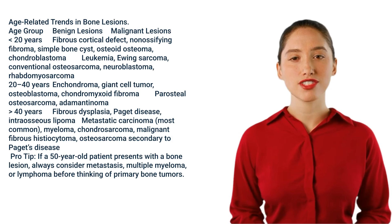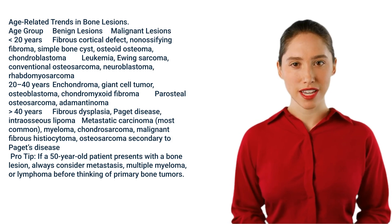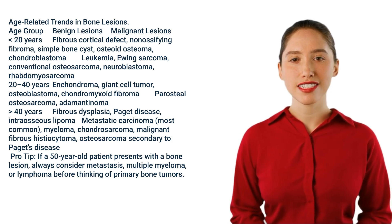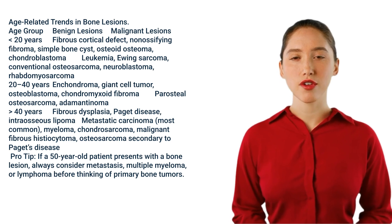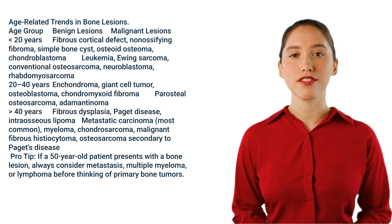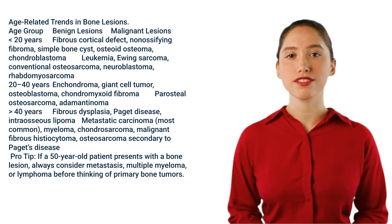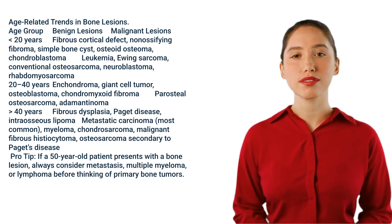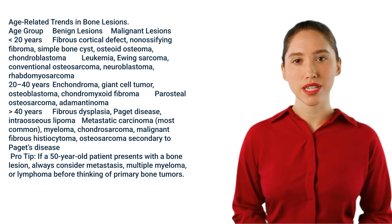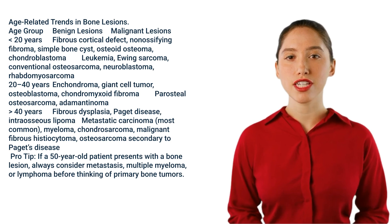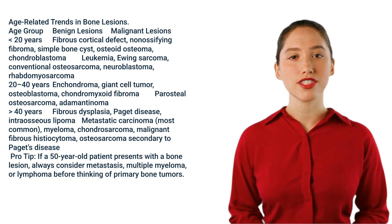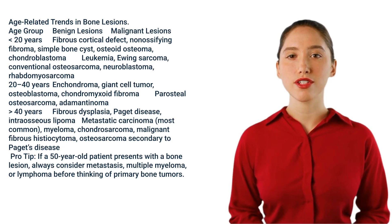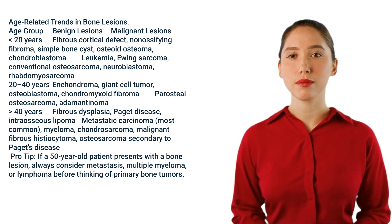Age-related trends in bone lesions. Before 20 years, common benign lesions include fibrous cortical defect, non-ossifying fibroma, simple bone cyst, osteoid osteoma, and chondroblastoma. Malignant lesions in this age group include leukemia, Ewing sarcoma, conventional osteosarcoma, neuroblastoma, and rhabdomyosarcoma.